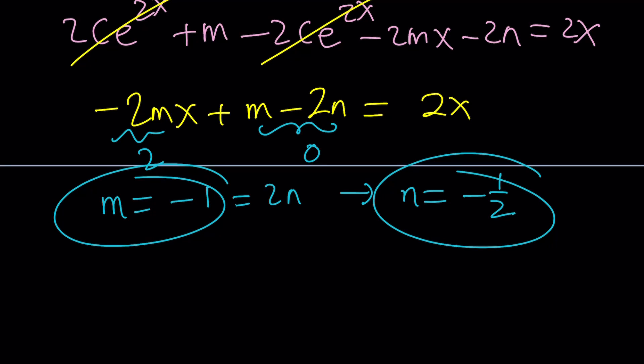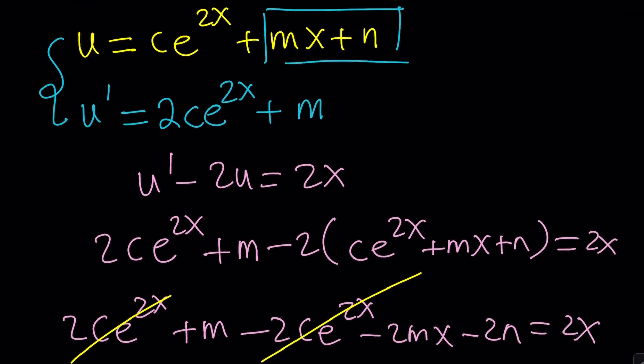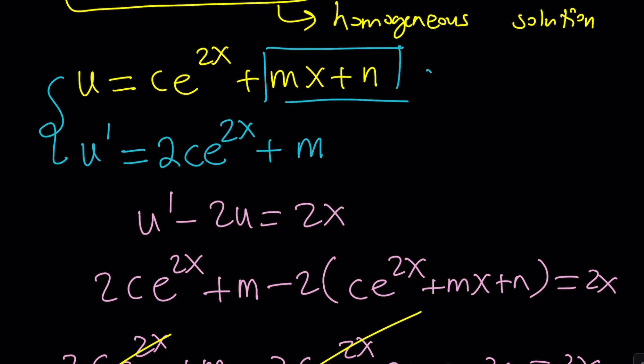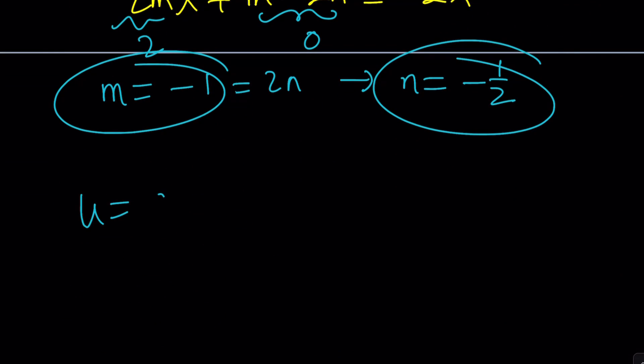So, now, what do we do with this? We're going to plug it into the non-homogeneous solution. So, u is going to be c times e to the power 2x plus mx plus n. Plus mx is going to be negative x plus n, which is going to be negative 1 half. So, this is the value of u, but remember, u was y squared. We replaced it with that, so back substitute. From here, you're going to get two solutions. Plus minus the square root of this expression. One thing we should be careful about, though, is y is not going to be 0.